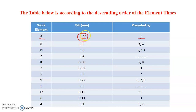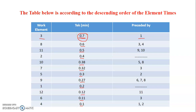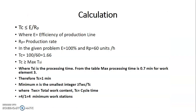Work element 3 takes 0.7 minutes — that is the largest time — so it is listed first. Then 0.6, 0.5, 0.4, 0.38, 0.32, 0.3, 0.27, 0.2, 0.12, 0.11, and 0.1. We arrange all work elements in descending order of Tek. This is what we call the largest candidate rule: the largest time should come first, followed by the next, and so on.